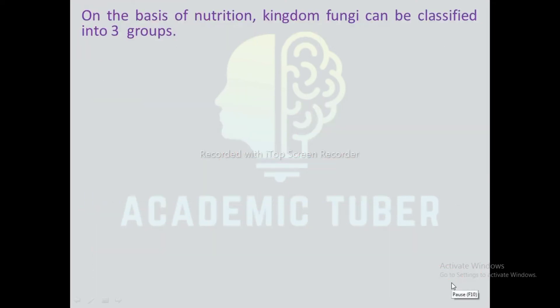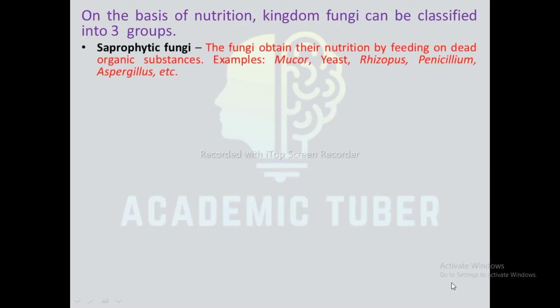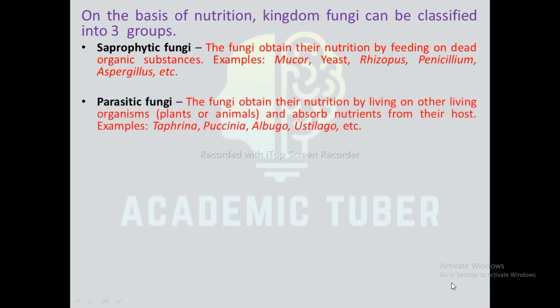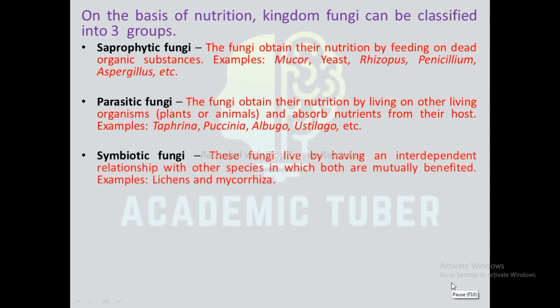On the basis of nutrition, kingdom Fungi can be classified into three groups. Saprophytic fungi: the fungi obtain their nutrition by feeding on dead organic substances, e.g. Mucor, yeast, Rhizopus, Penicillium, Aspergillus, etc. Parasitic fungi: the fungi obtain their nutrition by living on other living organisms — plants or animals — and absorb nutrients from their hosts, e.g. Taphrina, Puccinia, Albugo, Ustilago, etc. Symbiotic fungi: these fungi live by having an interdependent relationship with other species in which both are mutually benefited, e.g. lichen, mycorrhizae.